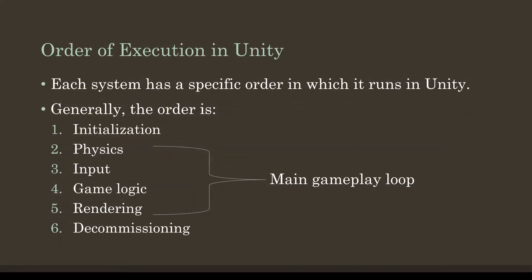In Unity, there is a set order in which systems run. The order is: initialization, physics, input, game logic, rendering, and decommissioning. The first and sixth — initialization and decommissioning — only happen once per game object. Everything is initialized and then it moves into a gameplay loop for physics, input, game logic, and rendering, in that order.